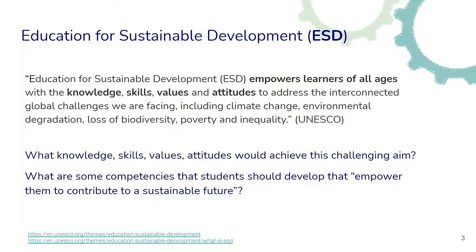As we can see, we are facing a lot of different challenges from local to global levels, spanning ecological challenges as well as social and economic challenges, including poverty and inequality. So the big question is: what kinds of knowledge, skills, values and attitudes would achieve this challenging aim? What kind of competencies would students need to empower them to contribute to a sustainable future?